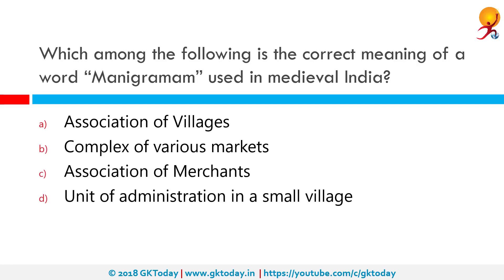Which among the following is the correct meaning of the word Manikramam used in medieval India? The Manikramam guild was a localized merchant body which first appeared along the Kerala coast in the 9th century AD. According to Hermann Gundert, Manikramam people were descendants of Syrian Christian merchants who were converted to Saivism by Tamil Saivite poet Manikka Vasagan.